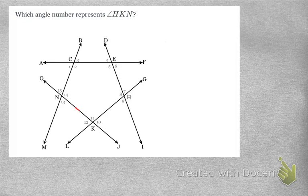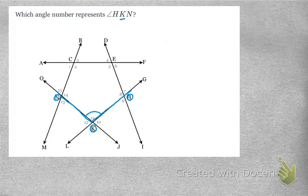First we have to identify where HKN is. I always look first for my vertex — here's my K — and then I want to connect K to the H and the N. I see my H here and my N here, so my angle would be identifying that space right there. An angle measures the degrees between your rays. An angle is made up of two rays that connect at a vertex, or corner. The answer is number 11.